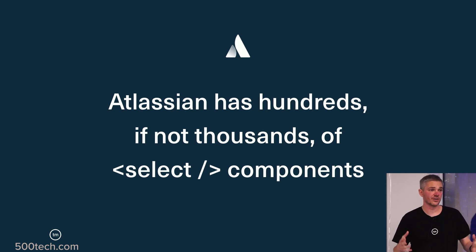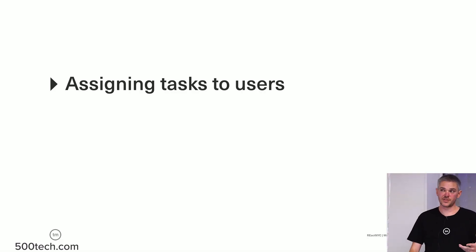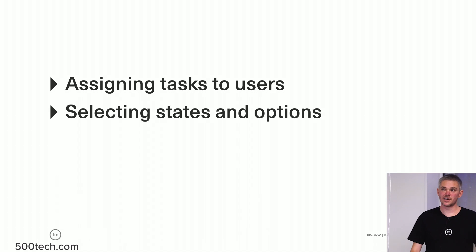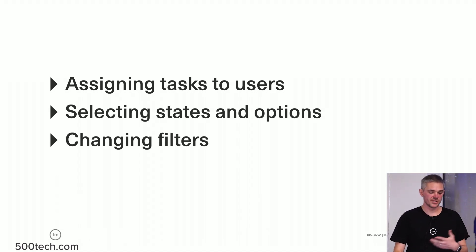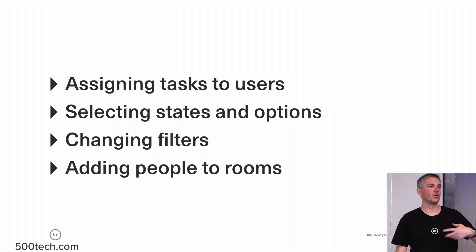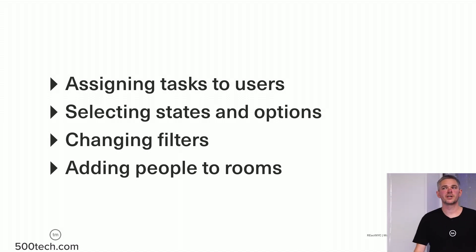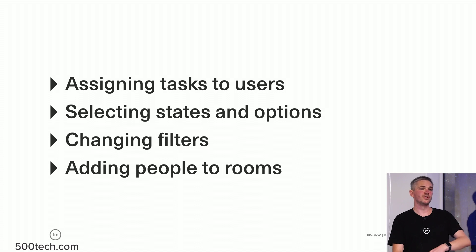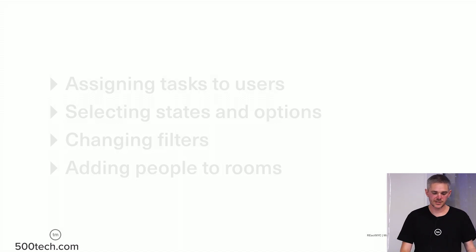If you think about JIRA, it's basically a glorified form, and most of the inputs are actually selects. They use it for things like assigning tasks to users, selecting states and options, changing filters, adding people to rooms in Stride. All of this stuff — the core user experience — is a select component. This is where it starts getting complicated: you end up with a whole lot of different things you might want to do depending on what you're trying to achieve.